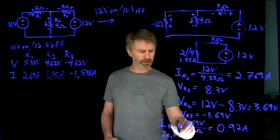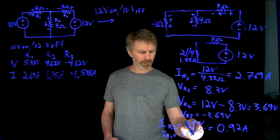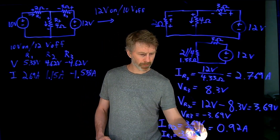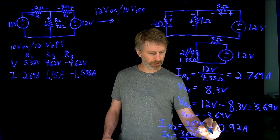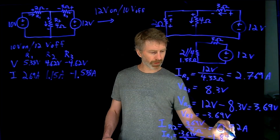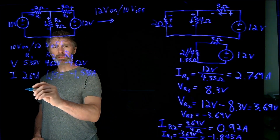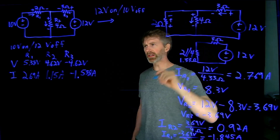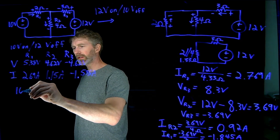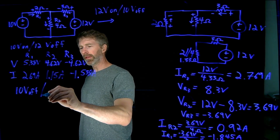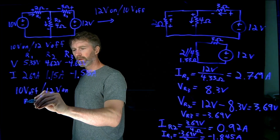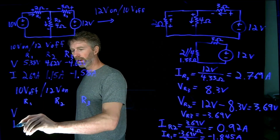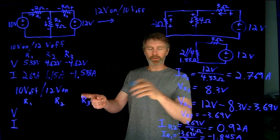IR1 sees 3.69 volts across 2 ohms but in the opposite polarity, so it works out to negative 1.845 amps. I've now found voltage and current for each resistor in Case 2 — 10-volt source off, 12-volt source on — and I'll fill in the table for R1, R2, and R3.